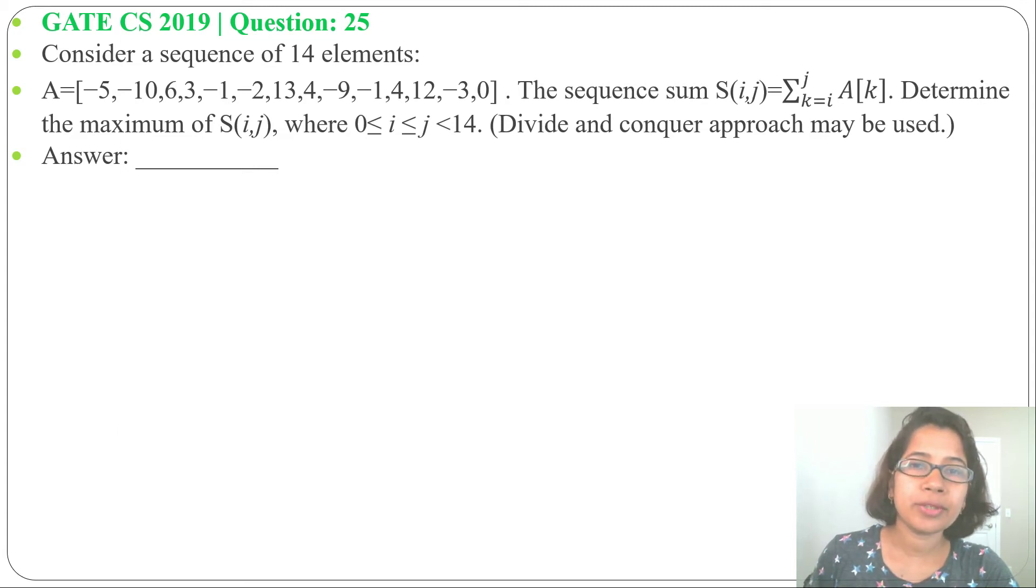Hi, let's solve one previous question of divide and conquer. This question was asked in GATE CS 2019, question number 25. Consider a sequence of 14 elements. Array A contains 14 elements.